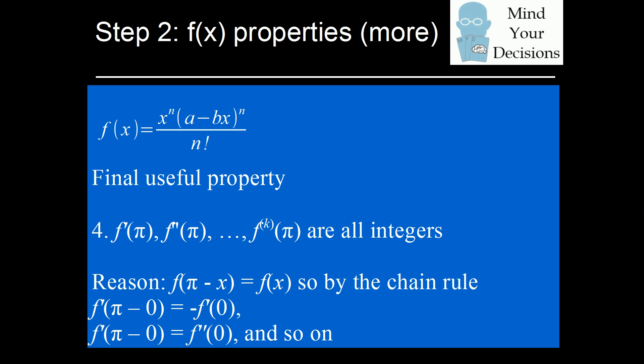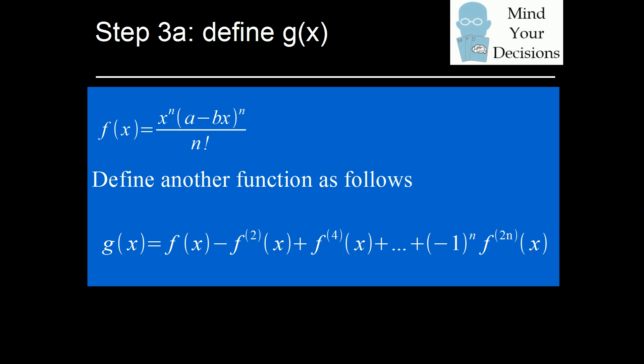So now we have four useful properties of f of x, and we will get to something even more complicated. We're going to define another function which is the sum of several derivatives of f of x. We define g of x to equal f of x minus the second derivative plus the fourth derivative, and so on, all the way up to the 2n-th derivative. The reason we go to 2n is that f of x is a polynomial of degree 2n, so beyond that all the derivatives will be zero.